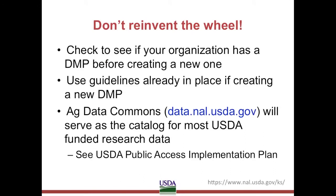Before you create a new DMP, researchers should determine if a DMP specific to their organization or previous projects already exists. If a DMP does not exist, follow guidelines already in place to create yours — don't reinvent the wheel. Note that current guidelines for NIFA are two pages in addition to the project proposal. Also note that under the USDA Public Access Implementation Plan, most research data generated with USDA funding will be required to be catalogued in the AgData Commons. This means that whether data is deposited directly in the AgData Commons or linked from another repository, a record for that data must exist in the AgData Commons.